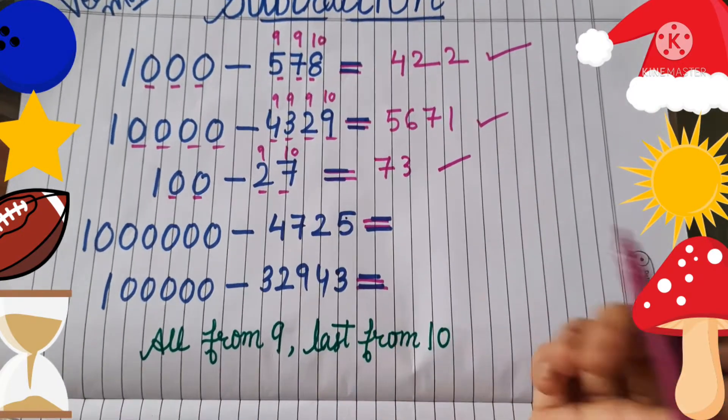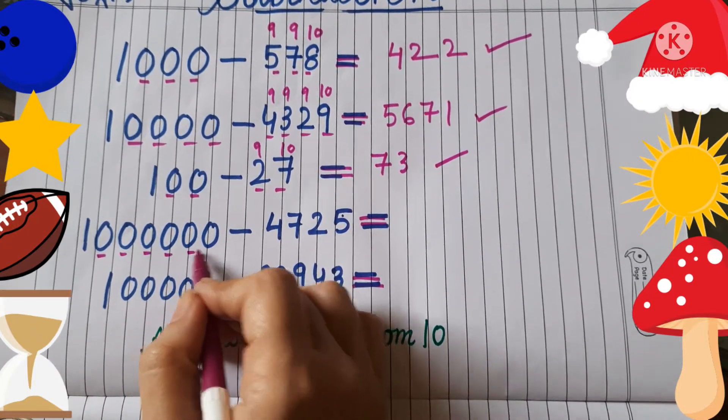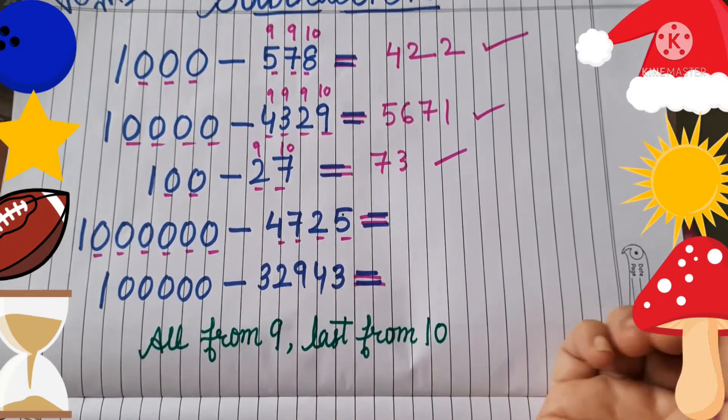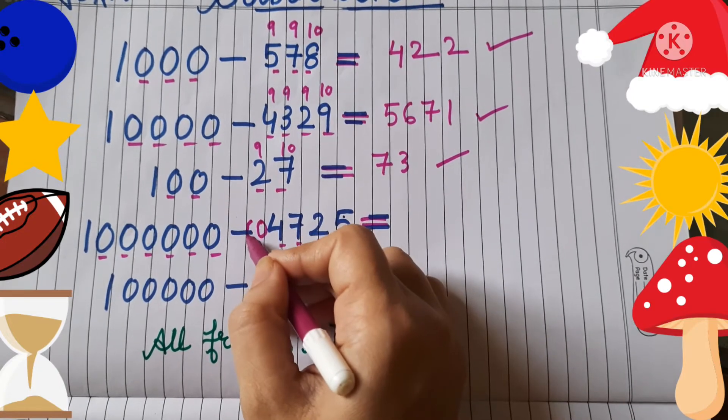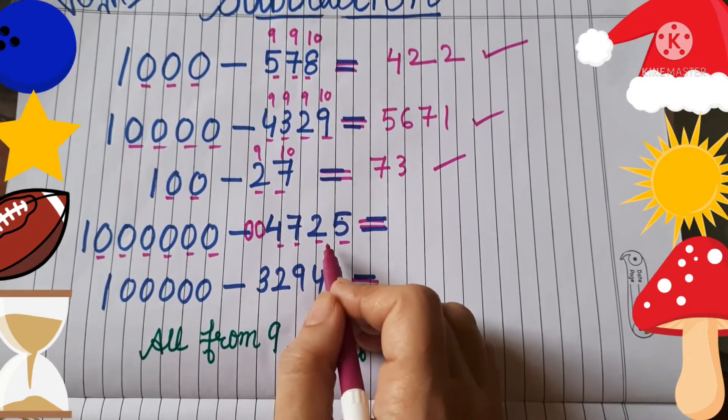Now let's move on to the next one. How many zeros are there? 1, 2, 3, 4, 5, 6. But here we have only 1, 2, 3, 4. So what we will do? We will put two zeros. Means we have to make equal the number of zeros and digits. Now let's start.